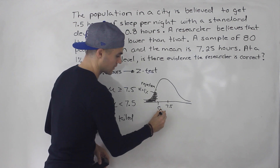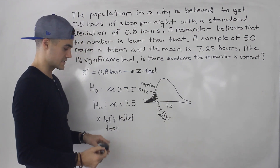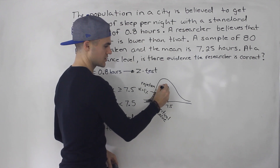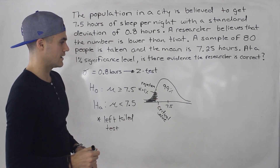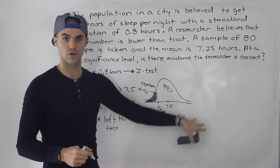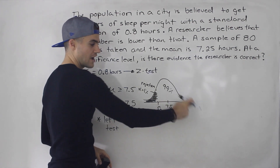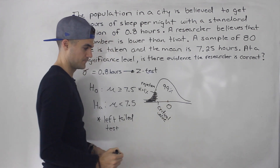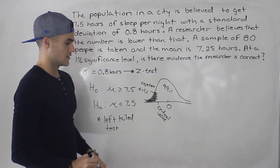We need to figure out a critical value. There's only one critical value because this is a one-tailed left-tailed test. The rejection region is 1%, so the non-rejection region is 99%. We don't deal with the number of hours on this axis — we have to convert to a Z distribution, a standard Z distribution. This 7.5, when converted to a standard Z distribution, has a mean of 0, and then we get a critical value on that standard Z distribution.